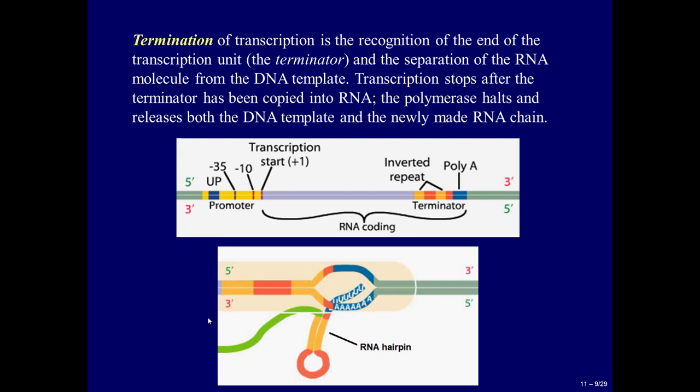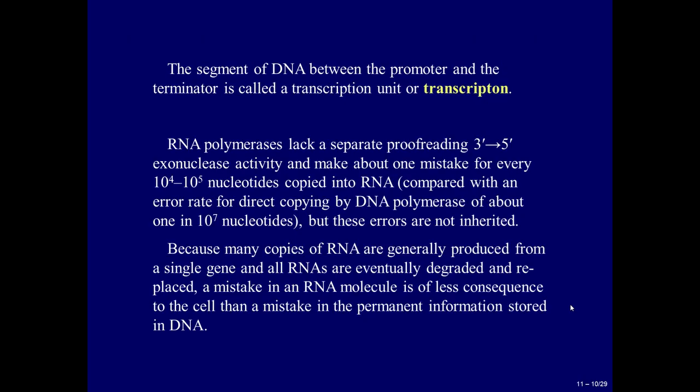Termination of transcription involves recognition of the end of the transcriptional unit — the terminator — and separation of the RNA molecule from the DNA template. Transcription stops after the terminator has been copied into RNA. The polymerase then releases both the DNA template and the newly made RNA chain. The bacterial terminator has inverted repeats; after RNA synthesis, such inverted repeats form an RNA hairpin that is recognized by RNA polymerase. RNA polymerases lack a separate proofreading 3' to 5' exonuclease activity and make about one mistake for every 10,000–100,000 nucleotides copied into RNA, compared with an error rate for DNA polymerase of about 1 in 10 million nucleotides.